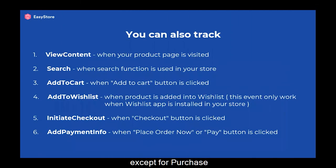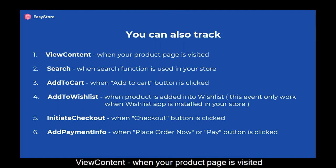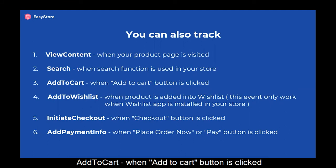Except for purchase, you can also track the following events: view content when your product page is visited, search when the search function is used in your store, add to cart when the add to cart button is clicked, and add to wishlist when a product is added into the wishlist.